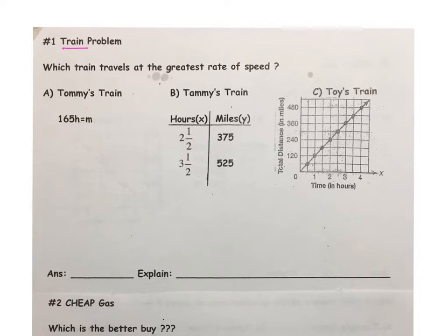Let's take a look at the train problem. It states which train travels at the greatest rate of speed. So for each case, we need to find the train speed. But we know in order to calculate a unit rate, we're always going to set up the ratio first, y over x. And if we take a look at the table in the middle, we know we're going to be comparing miles to hours. So write that down in your notebook, or on your worksheet if you were able to print one.